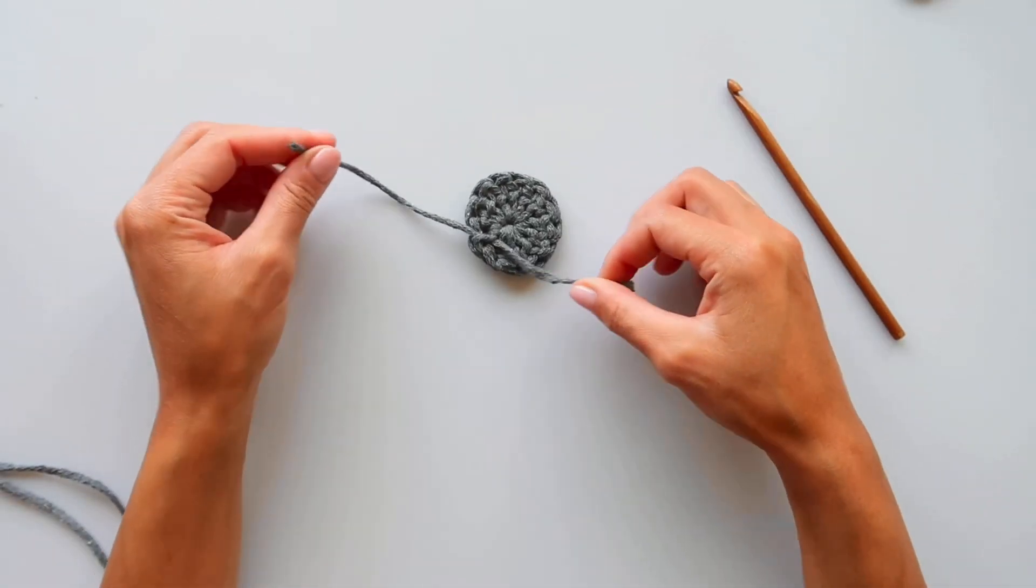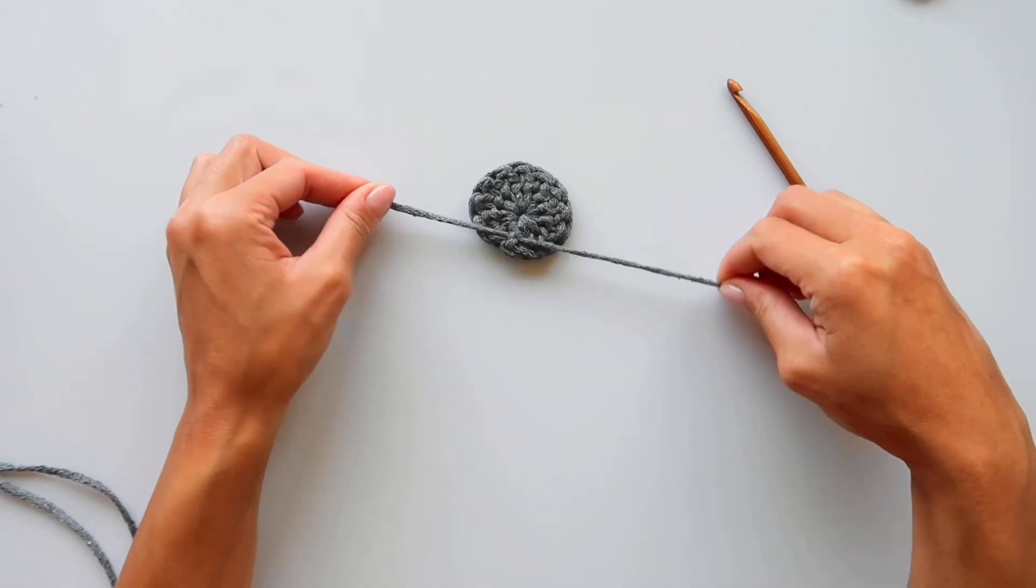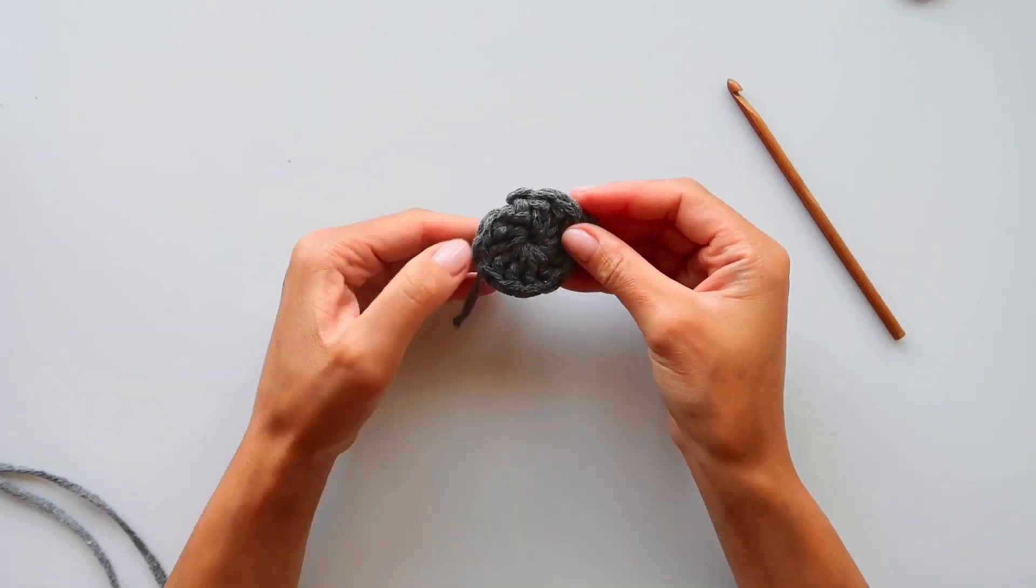And then we will cut off the yarn and fasten the yarn ends. And then we are finished with our magic ring.